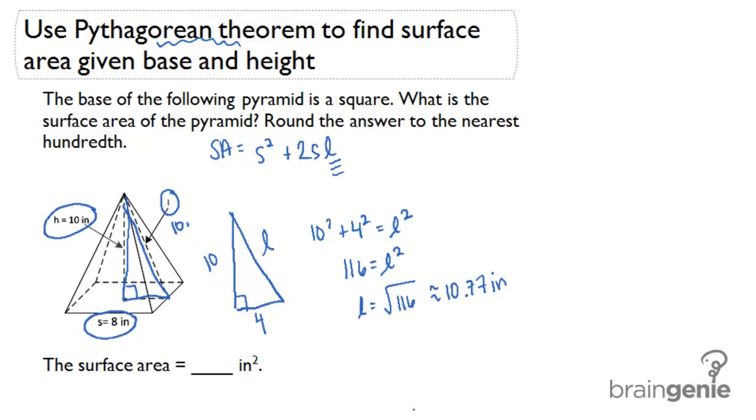I'm going to write that into the picture. Now we can use our surface area formula. So in our surface area formula we'll plug 8 in for the side, so we'll have 8 squared plus 2 times 8 times 10.77.